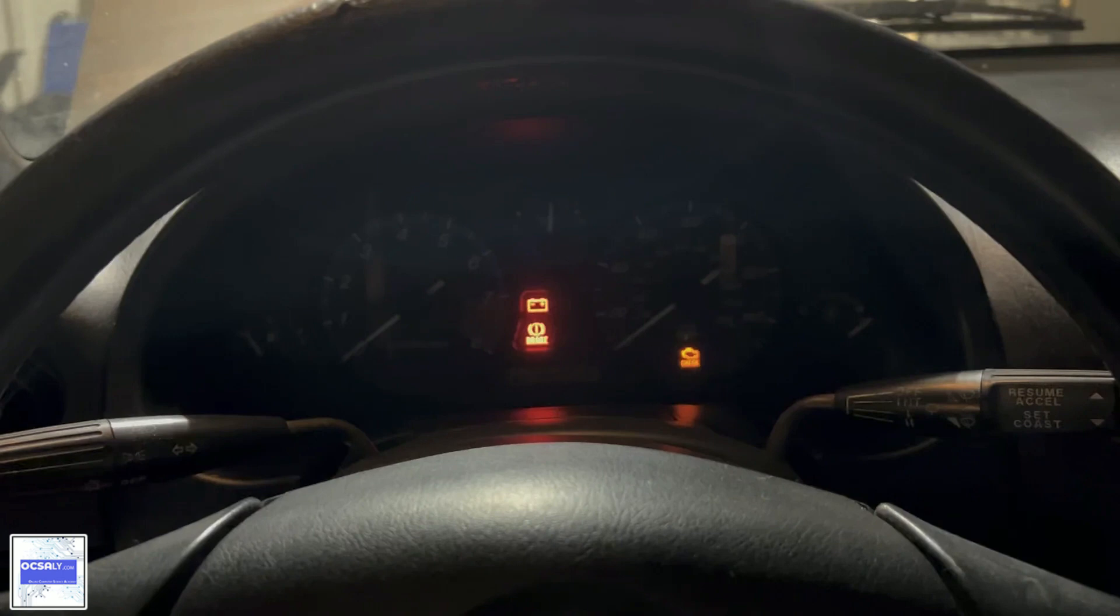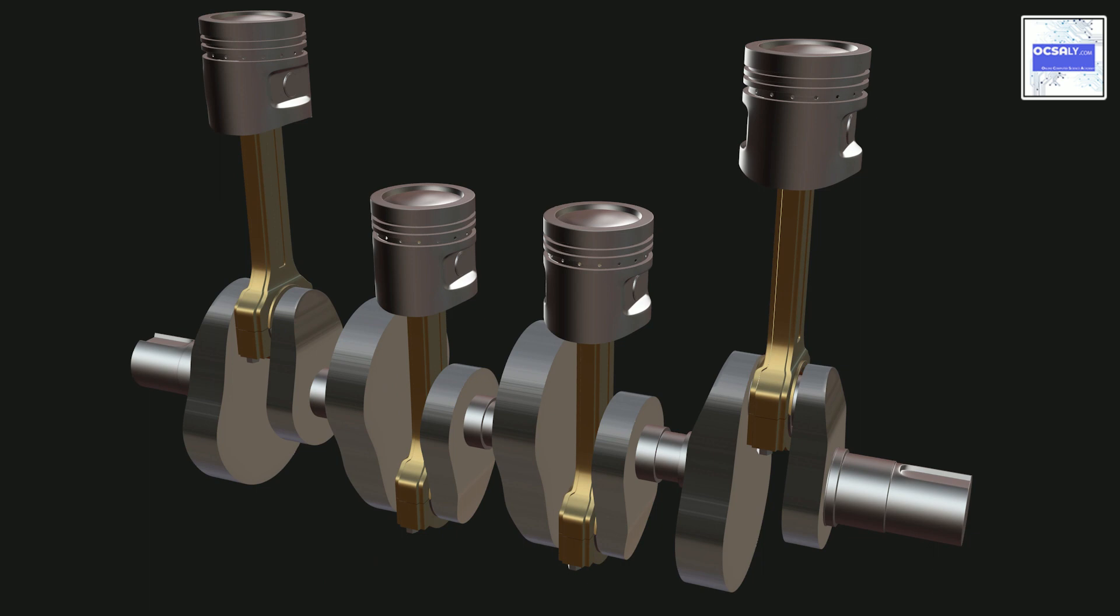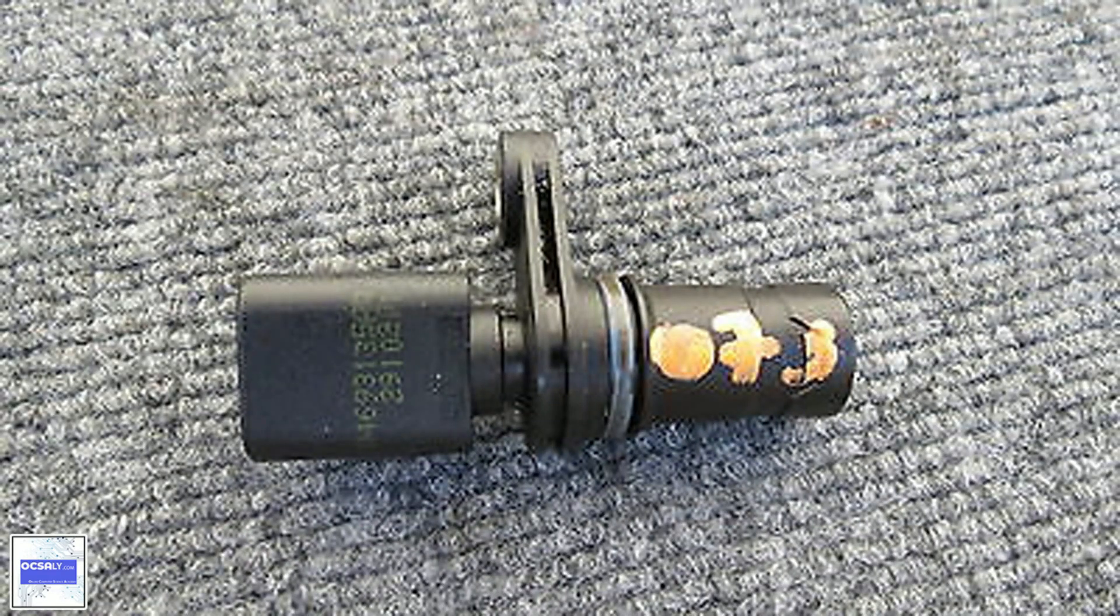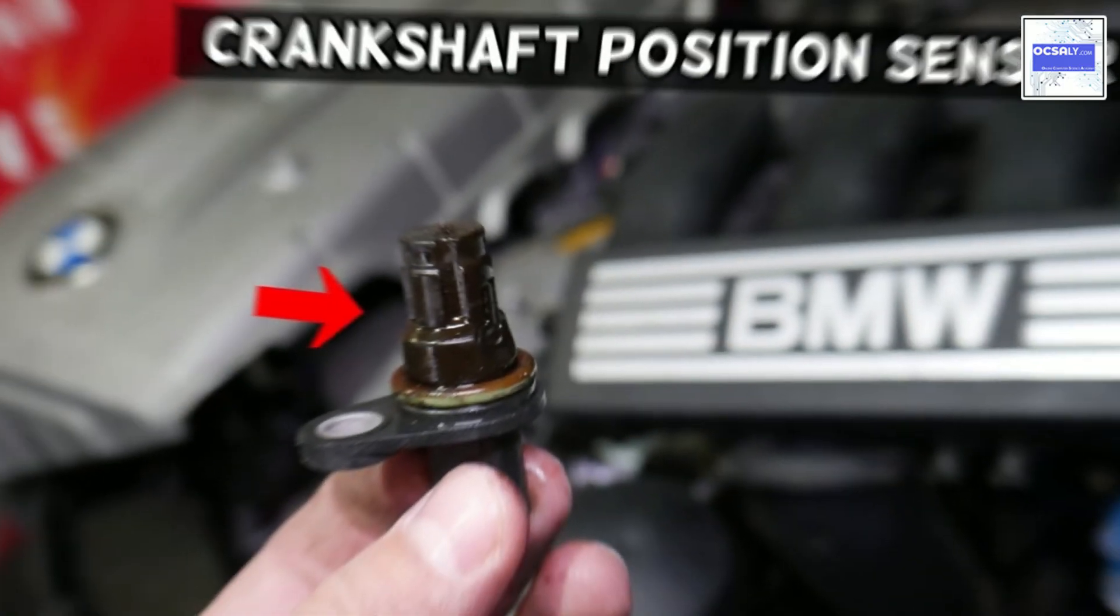The PCM uses the signal from the crankshaft position sensor to determine at what time to produce the spark and in which cylinder. The signal from the crankshaft position is also used to monitor if any of the cylinders misfire.